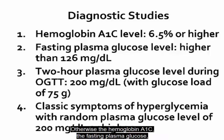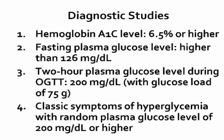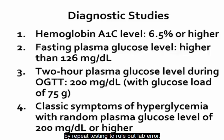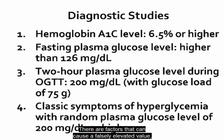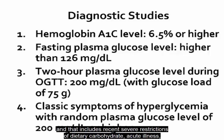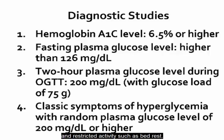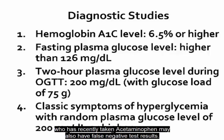Otherwise, the hemoglobin A1C, fasting plasma glucose, or 2-hour plasma glucose level should be confirmed by repeat testing to rule out lab error. Factors that can cause falsely elevated values include recent severe restrictions of dietary carbohydrate, acute illness, medications like contraceptives and corticosteroids, and restricted activity such as bed rest. A patient with impaired GI absorption or who has recently taken acetaminophen may have false negative test results.